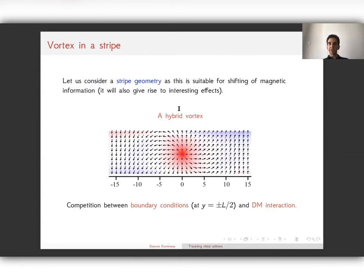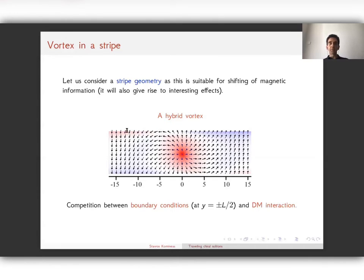We now look at the two-dimensional easy-plane antiferromagnet in a stripe geometry, suitable for applications such as shifting magnetic information along the stripe. The DM interaction favors an L-type vortex, but the boundary conditions favor an orientation of the Néel vector perpendicular to the upper and lower boundaries, which would favor a Bloch-type vortex. This competition results in a hybrid vortex.